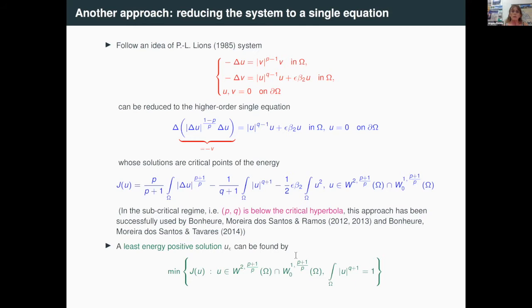Now what happens in the critical situation? Finding a solution is difficult, as everybody knows in the critical setting. But in this case, one can find, as in the previous problem, a least energy positive solution, which is obtained by minimizing J on the L^(Q+1) unit sphere.